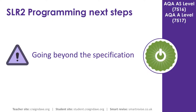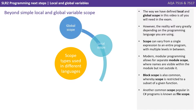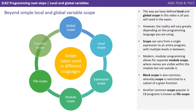That's everything you need to know for the exam, but if you want to know just a little bit more about variable scopes, carry on listening to this beyond the specification section. So the way we've defined local and global scope in this video is all you need to know for the exam. However, the reality will vary greatly depending on the programming language we're using. Scope can vary from a single expression to an entire program and multiple levels in between.